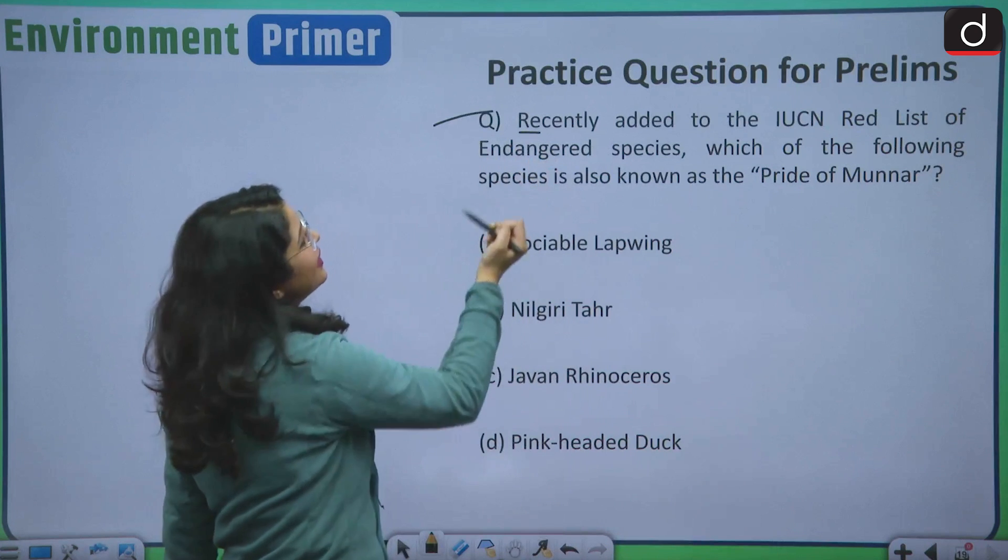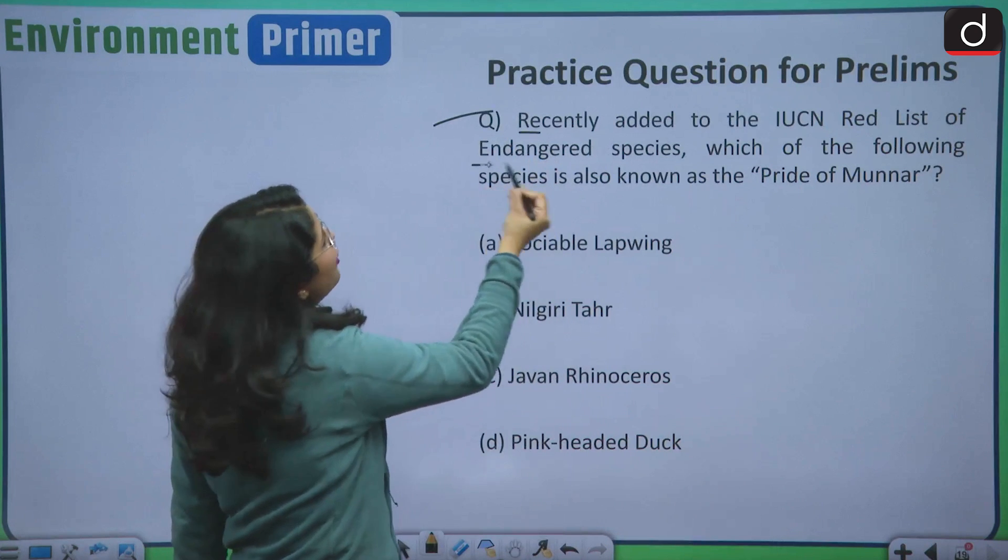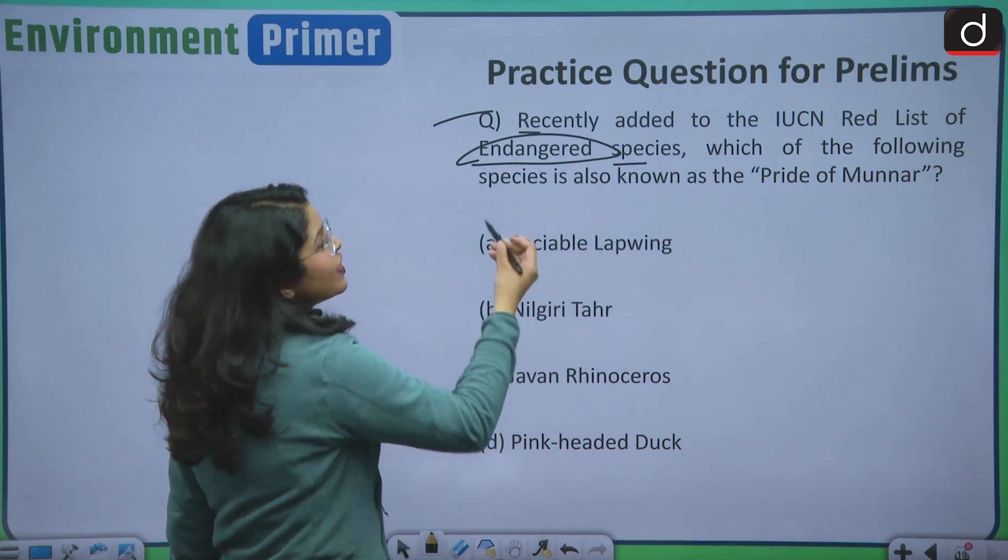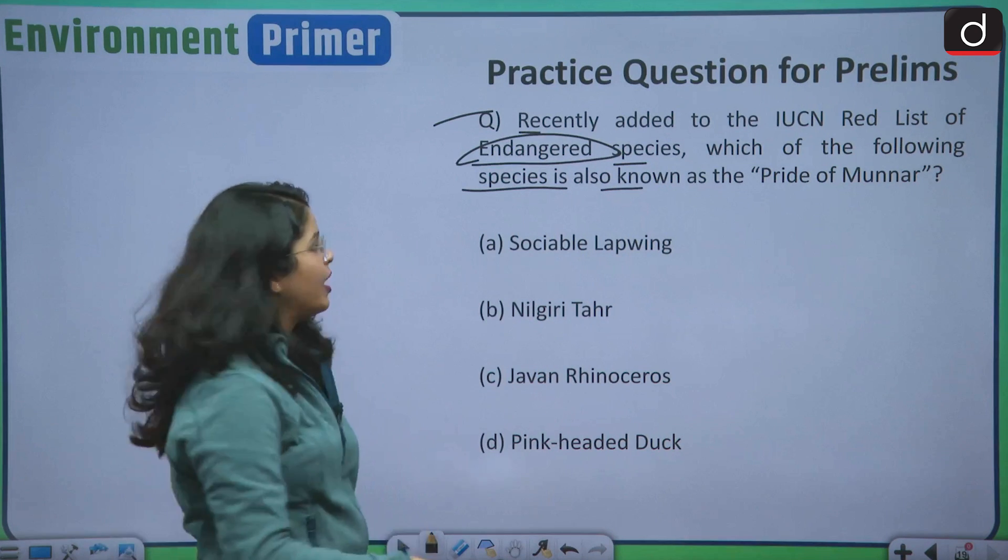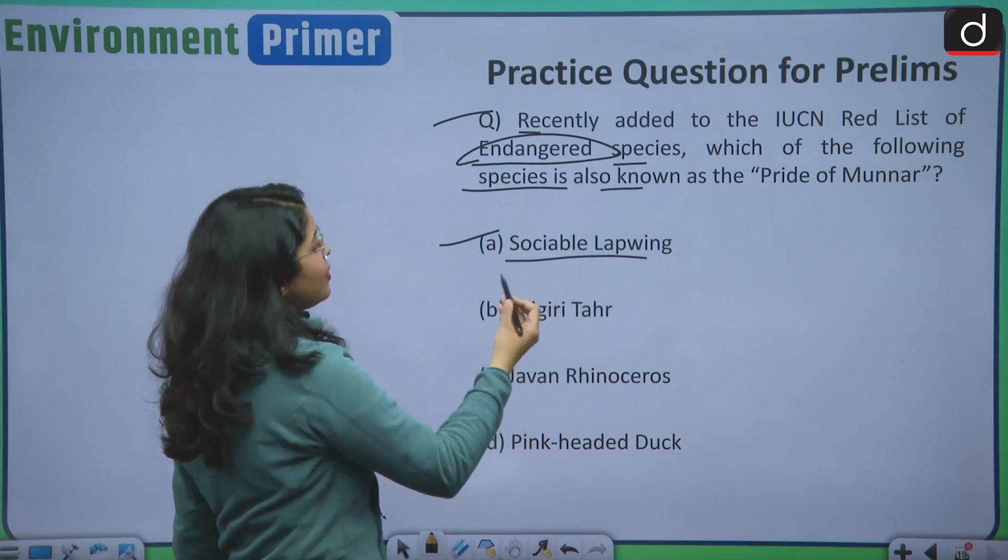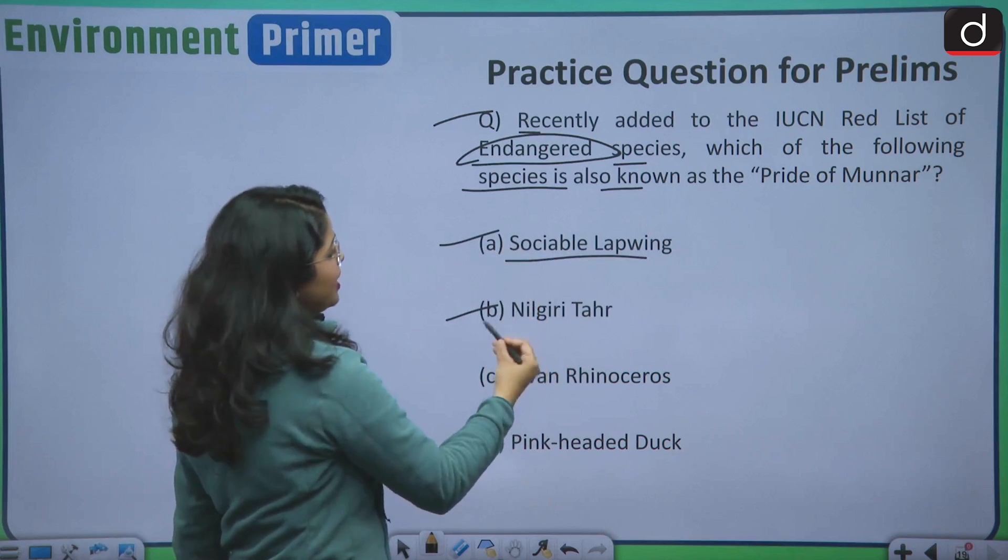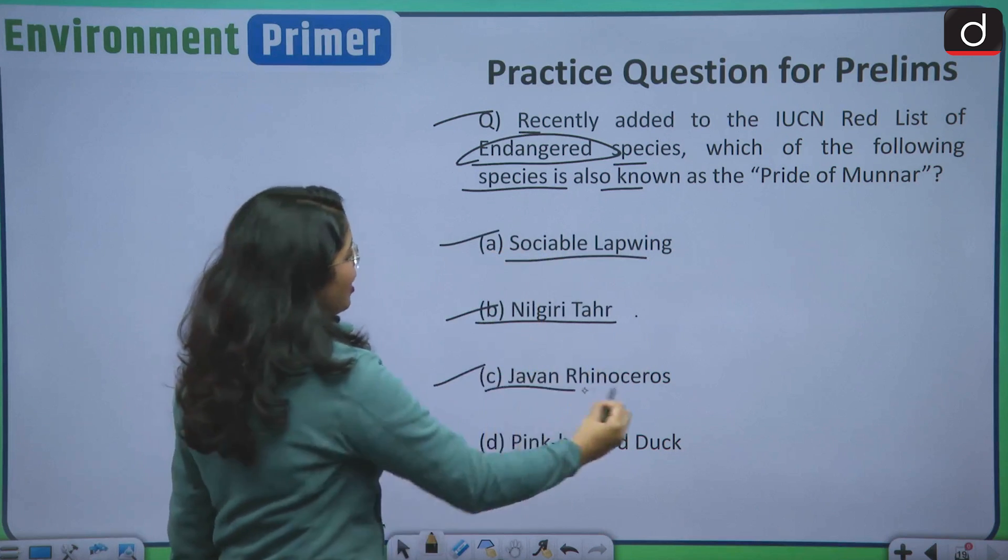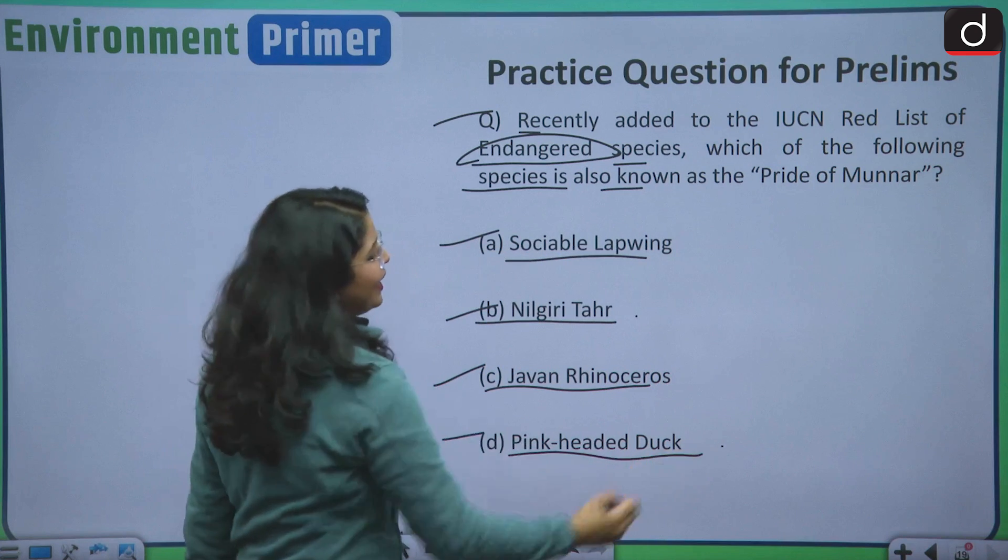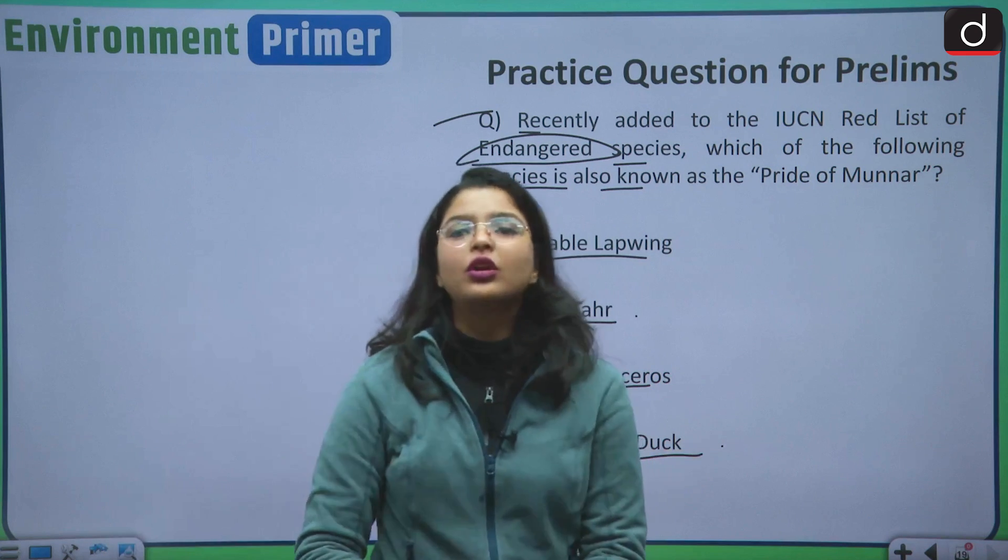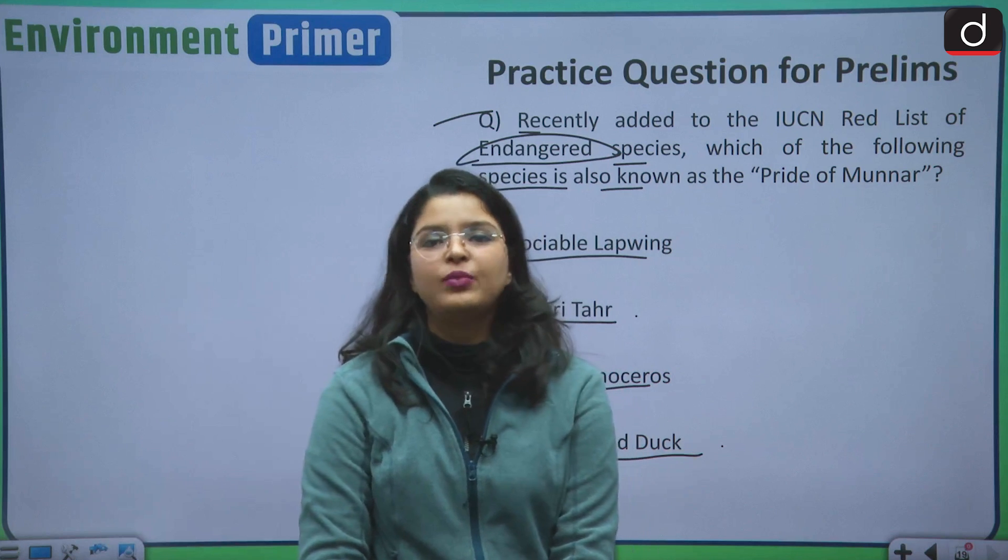The question is recently added to the IUCN red list of endangered species. Which of the following species is also known as the pride of Mannar? Your options are, option A is sociable lapwing, then your option B is Nilgiri tahr, then Javan rhinoceros and your option D is pink-headed duck. Kindly mention your answers in the comment box below.